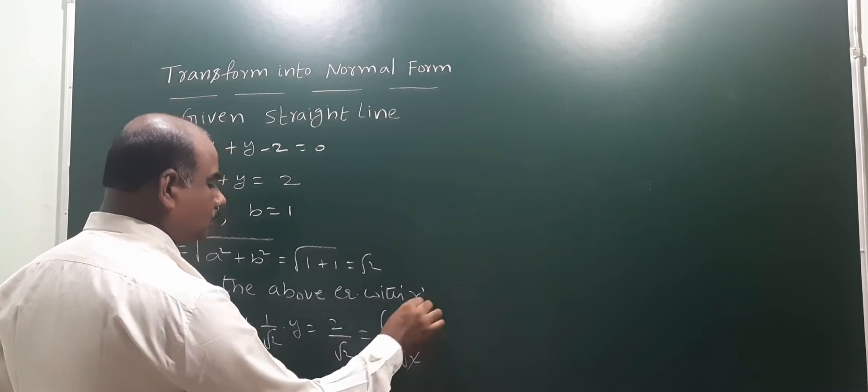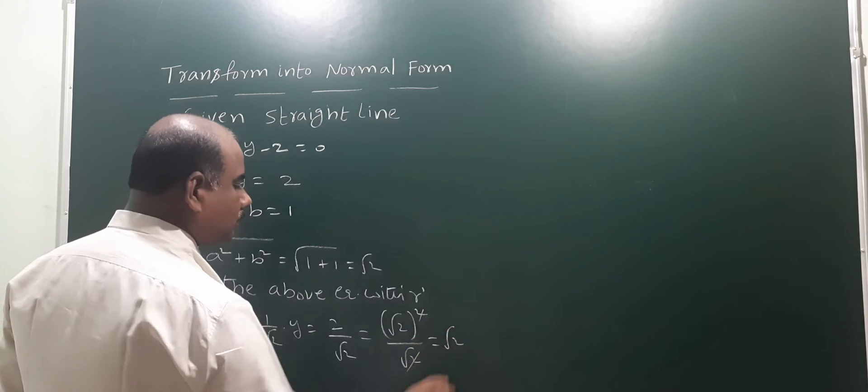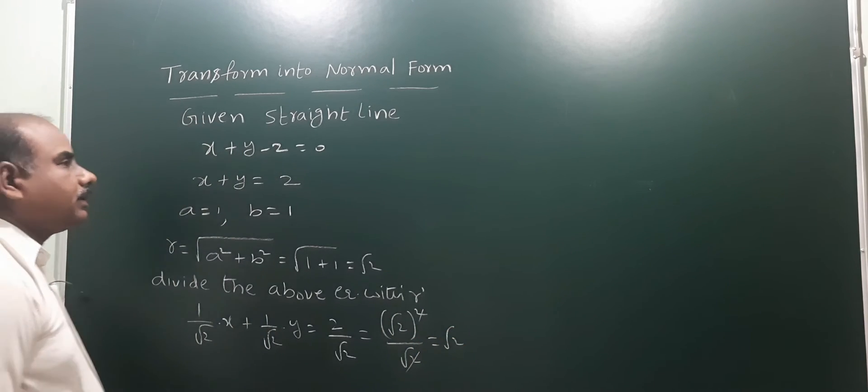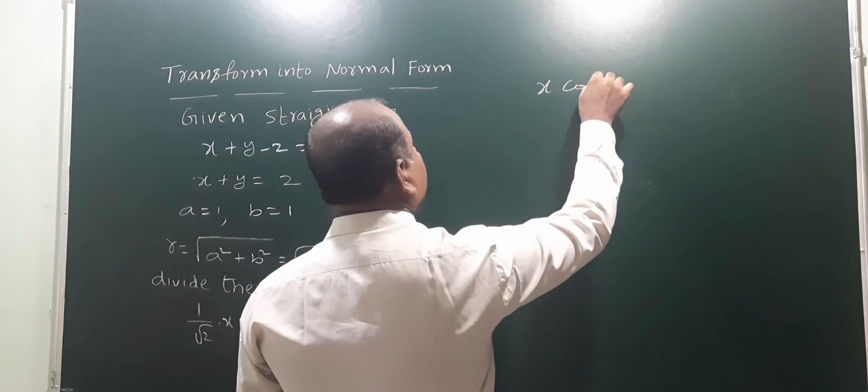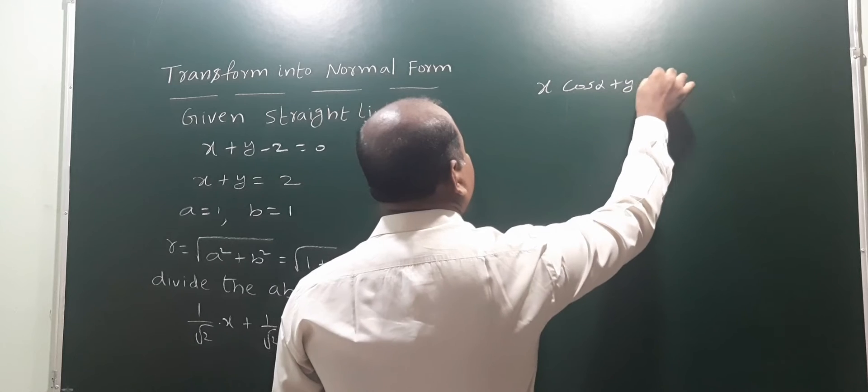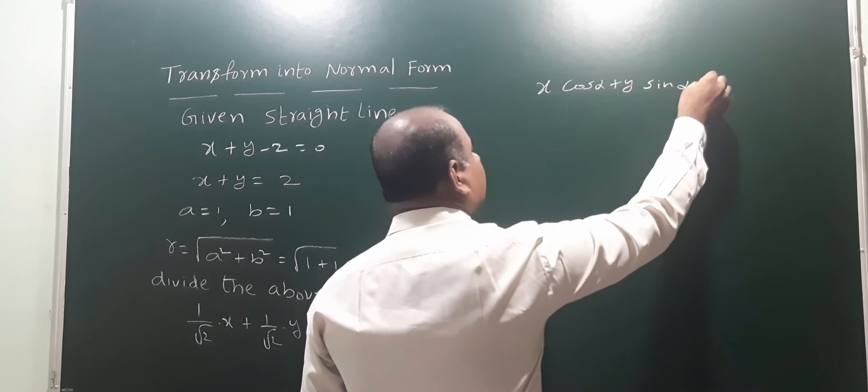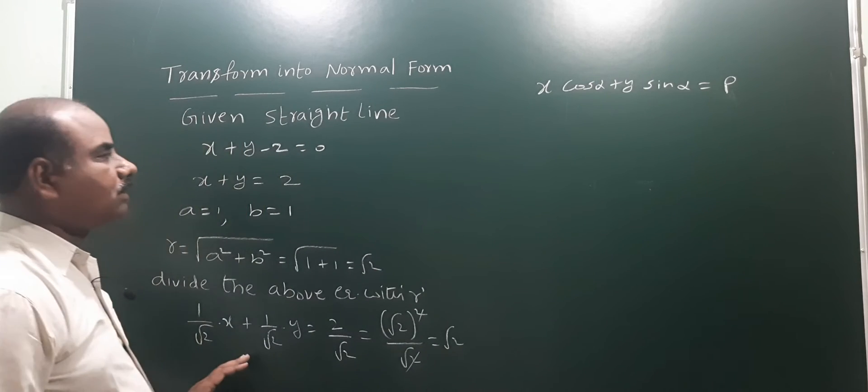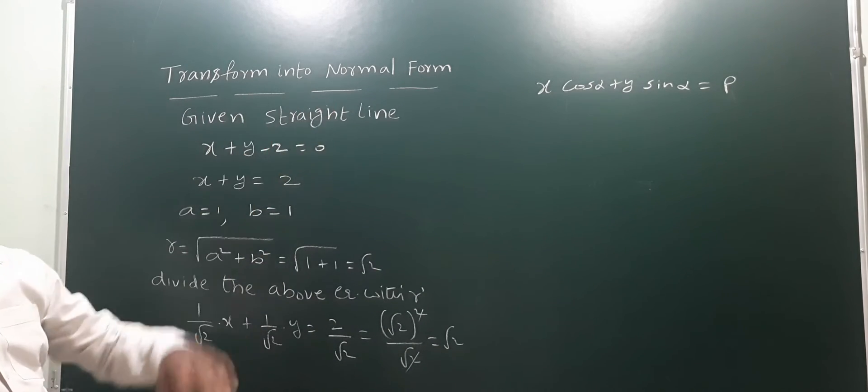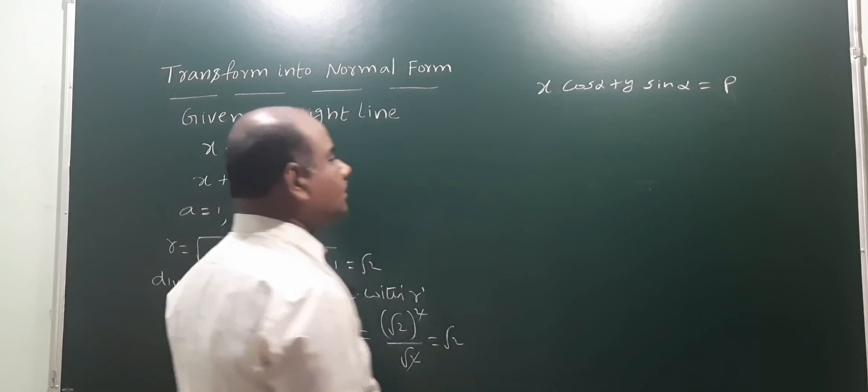Now compare this with the standard normal form: x cos alpha plus y sin alpha equals p. Our equation is now in normal form, ready to compare.